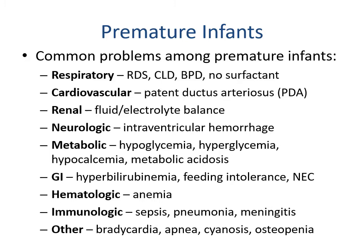Common problems for premature infants include respiratory issues such as respiratory distress syndrome, chronic lung disease, bronchopulmonary dysplasia, or lack of surfactant; cardiovascular issues including patent ductus arteriosus; renal issues including fluid and electrolyte shifts; neurological issues including intraventricular hemorrhage; metabolic issues such as hypoglycemia, hyperglycemia, hypocalcemia, and metabolic acidosis; GI issues such as hyperbilirubinemia, feeding intolerance, and necrotizing enterocolitis; hematological issues such as anemia; immunological issues such as sepsis, pneumonia, or meningitis; and other conditions including bradycardia, apnea, cyanosis, and osteopenia.